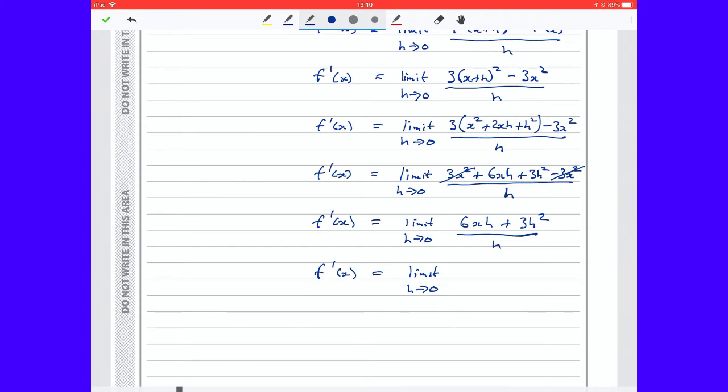Now 6xh divided by h is 6x, and plus 3h squared divided by h is plus 3h. Now only now am I going to stop writing the limit as h tends to 0. I'm going to let it become 0, in which case the 6x will still be 6x, but the 3h will be 3 times 0.